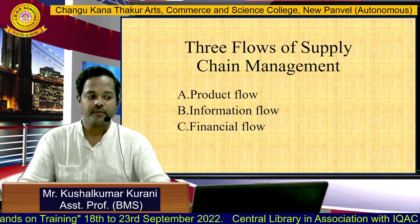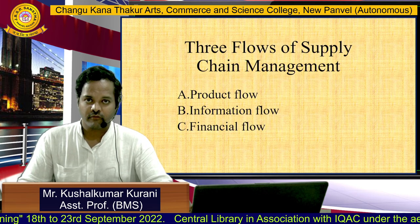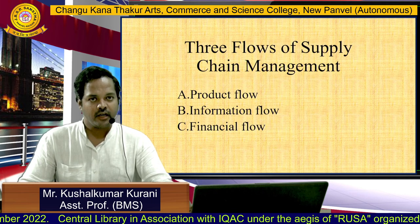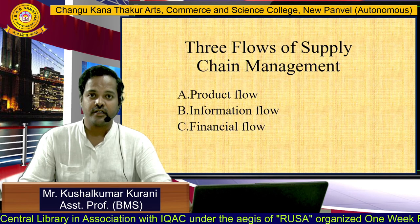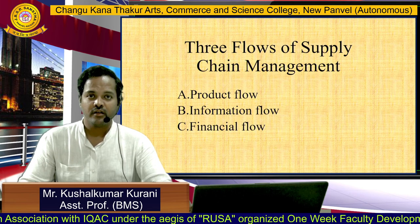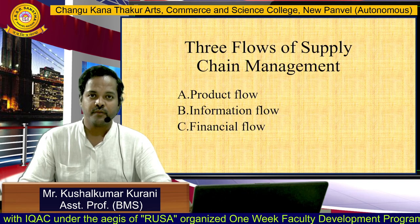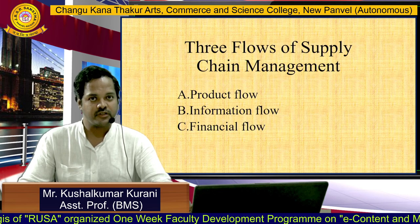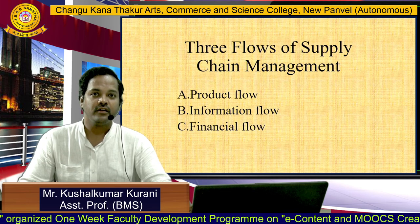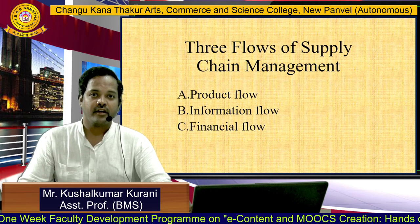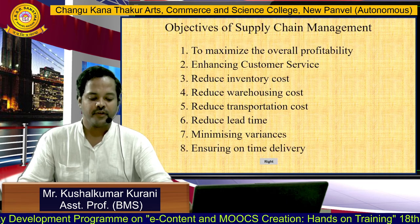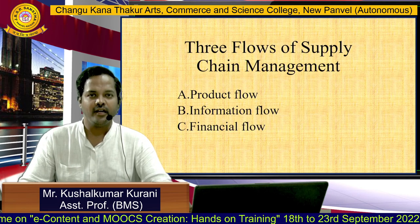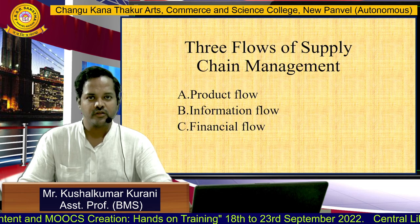Then information flow. Information is about the product on one hand and about the customer on the other. When you download any app, you have to give your personal details to the company. When buying, you also check the price, quality, quantity, and sometimes the reviews given by previous customers. And finally financial flow — this is the credit worthiness of the customer. All companies do business for profit, and finance plays a very important role. The end result should be profitable.